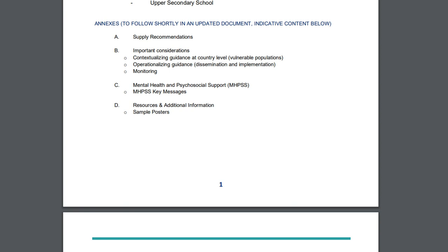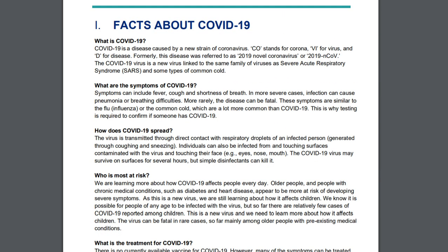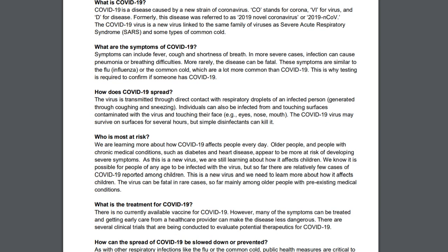Additional information: facts about COVID-19. What is COVID-19? COVID-19 is a disease caused by a new strain of coronavirus. Corona stands for 'crown-like,' and this virus is also referred to as 2019 novel coronavirus, related to the SARS family virus and severe acute respiratory syndrome.